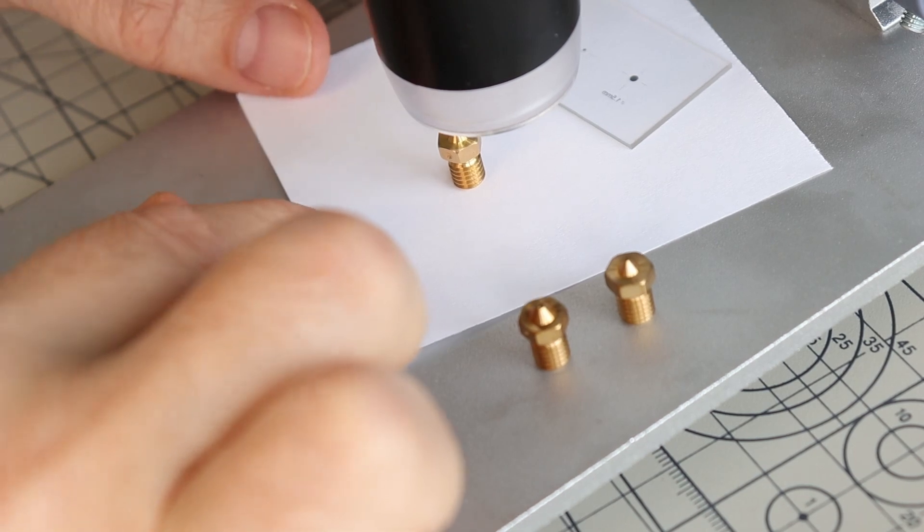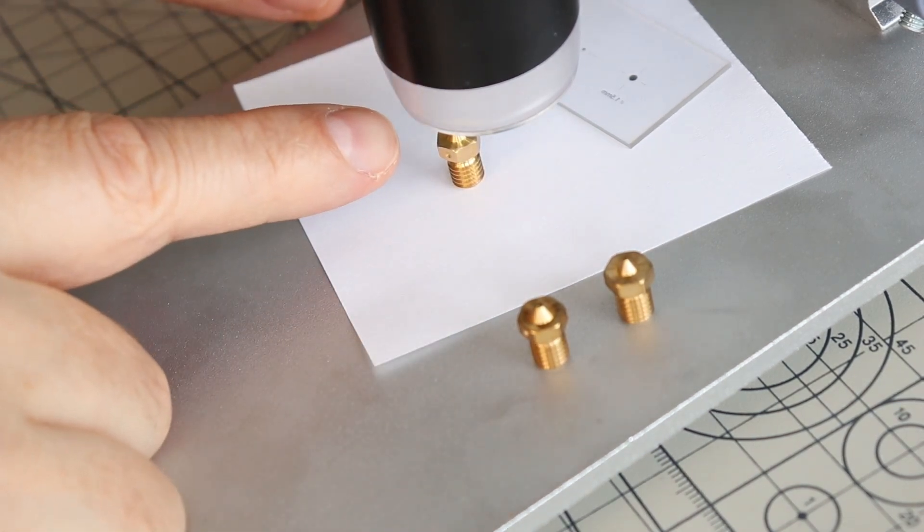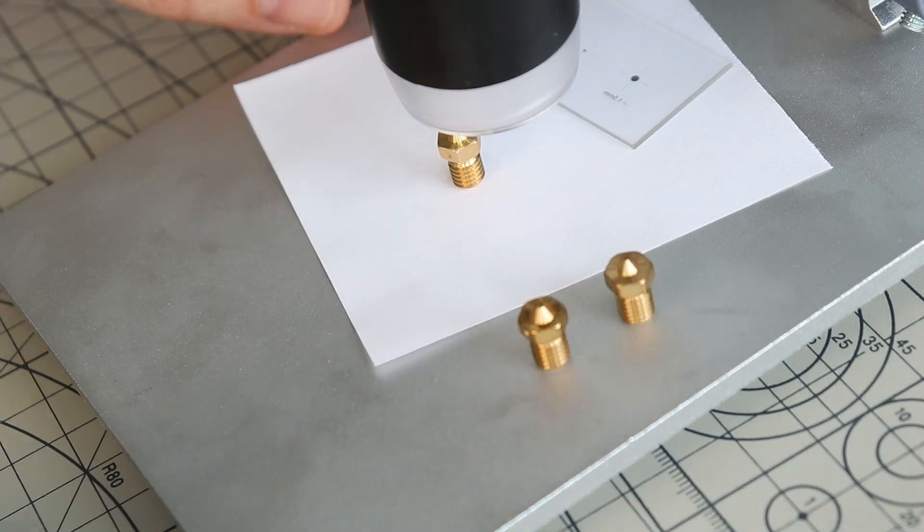So in my next test I want to measure the diameter of the nozzles so this is a 0.4, 0.6 and 0.25 millimeter diameters.